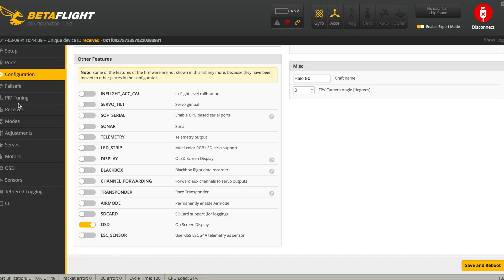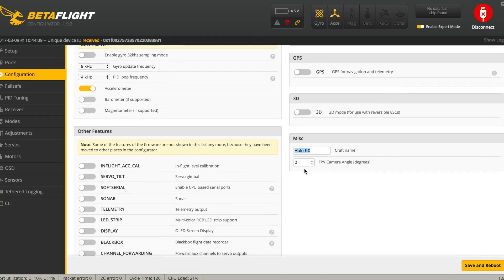and then if you want to display on the OSD if you want to display your craft name you need to have that set as well under miscellaneous